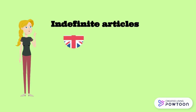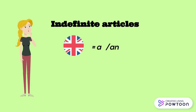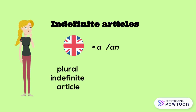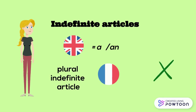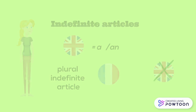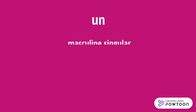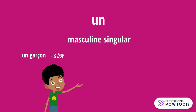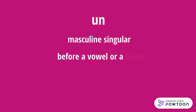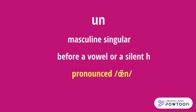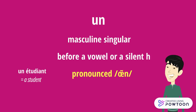They correspond to the English 'a'. Note that there is a plural indefinite article in French, unlike English. 'Un' is used with masculine singular nouns. For instance, 'un garçon' means 'a boy'. Before a vowel or a silent H, 'un' is pronounced 'an'. For example, 'un étudiant' means 'a student'.